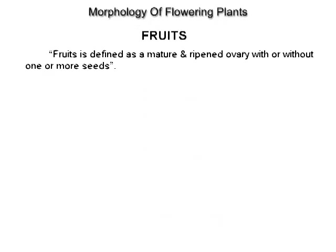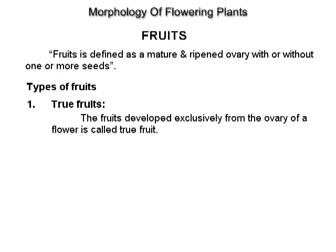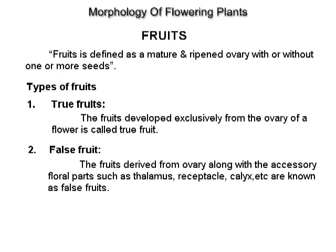Fruits. A fruit is defined as a mature and ripened ovary with or without one or more seeds. Types of fruits. True fruits: the fruit developed exclusively from the ovary of a flower is called a true fruit. False fruits: fruits derived from the ovary along with accessory floral parts such as thalamus, receptacle, calyx, etc. are known as false fruits. Examples: apple and cashew nut.